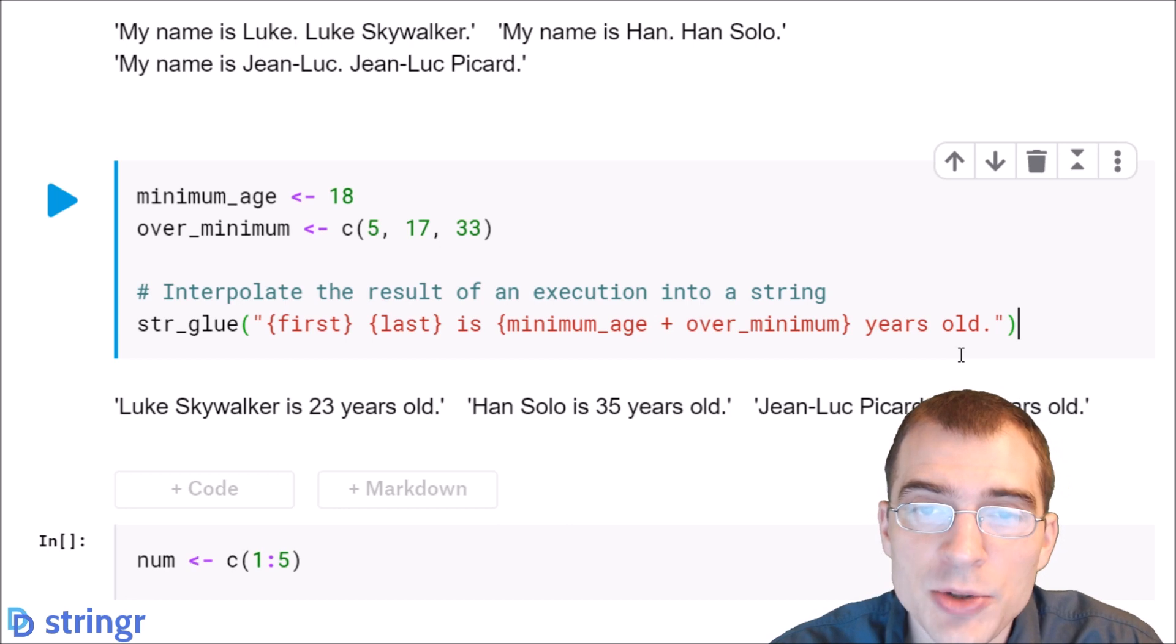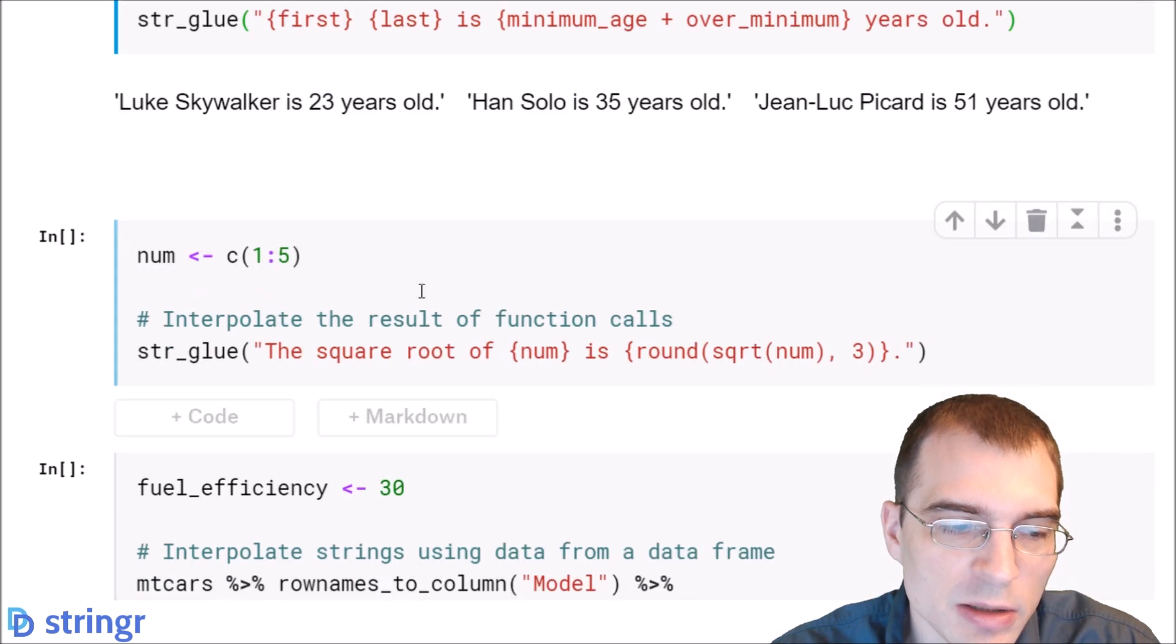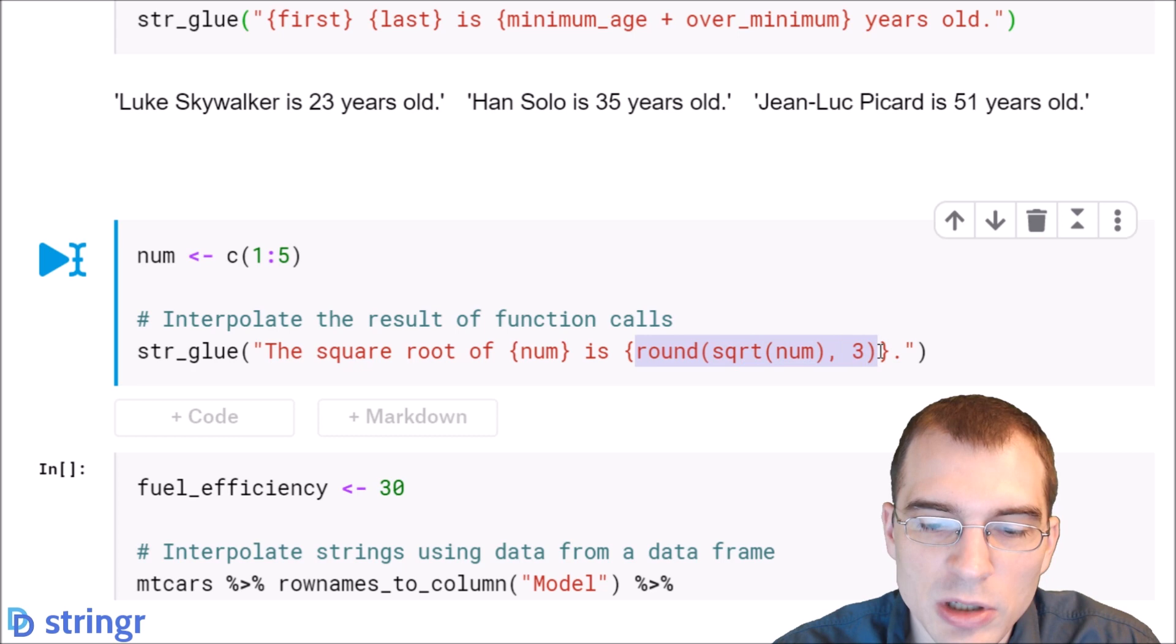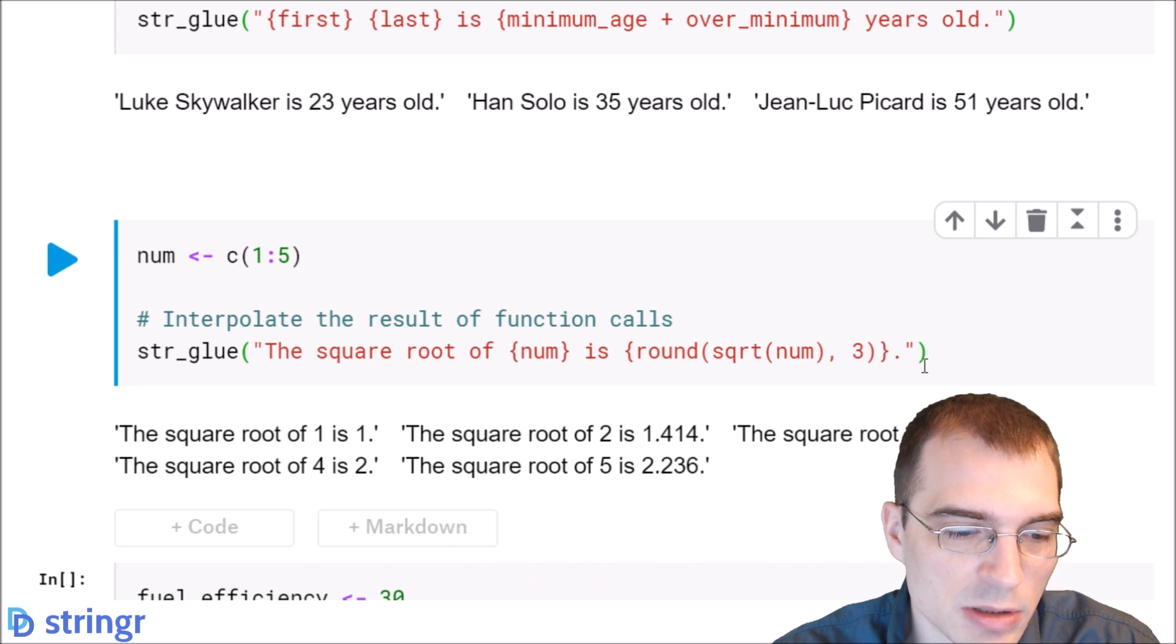Now to show that you can also use the results of functions directly within the curly braces, we'll show how to do that. So we're going to store five numbers. And then we're going to make some strings saying the square root of the number is, and then we're going to pass in a function call. So within the curly braces, we're calculating the square root and also rounding it. And that will be converted into part of the character string. So let's just run this and see what the result is.